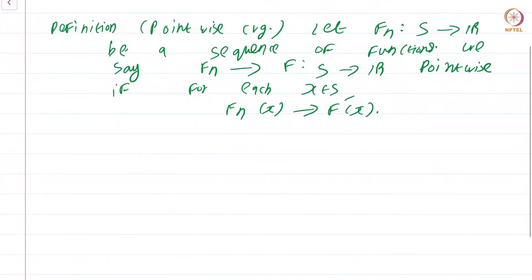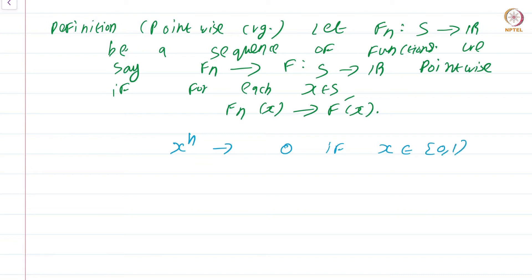In the last module, we already saw an example of such convergence. We saw that x^n converges to the function that is 0 if x is in [0,1) and 1 if x equals 1. So we know that pointwise convergence of a sequence of functions is not a guarantee that the limit function will also be continuous, even if you start with the nicest functions like x^n.